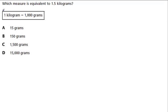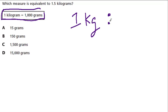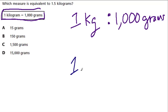The problem is about converting between kilograms and grams. They give us the conversion: one kilogram equals one thousand grams. We want to know what measure is equivalent to 1.5 kilograms, so we're going to write another ratio that needs to be proportional—it has to follow the same rule.